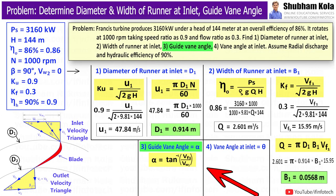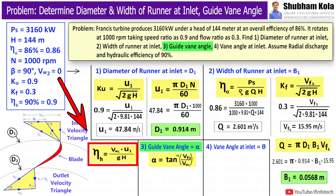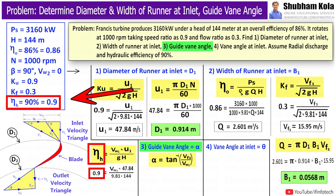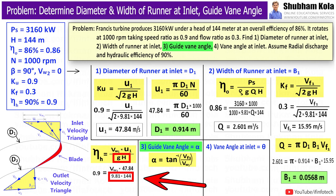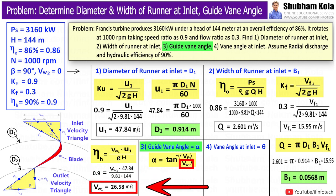But here we don't know the value of Vw1. So, here first we need to find out this value in order to calculate guide vane angle. We have already found value of Vf1 as 15.95 m/s. To calculate Vw1, I will use hydraulic efficiency equation, because hydraulic efficiency is given in the question. We have already found value of U1 as 47.84 m/s, and H is given in the question, g = 9.81. So, by putting all these values, I will calculate Vw1 as 26.58 m/s.